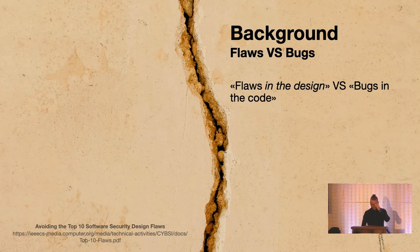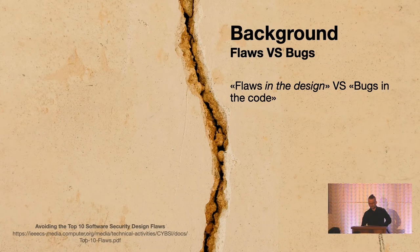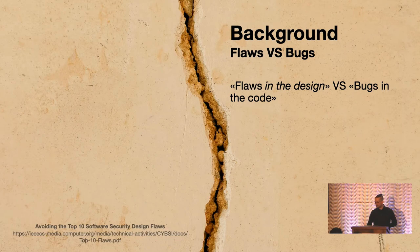This talk takes as a starting point Gary McGraw's security flaws — basically defects in the design or architecture, as opposed to in the implementation. More information about this can be found in the document 'Avoiding the Top 10 Software Security Design Flaws', which was published by the IEEE Center for Secure Design back in 2015.